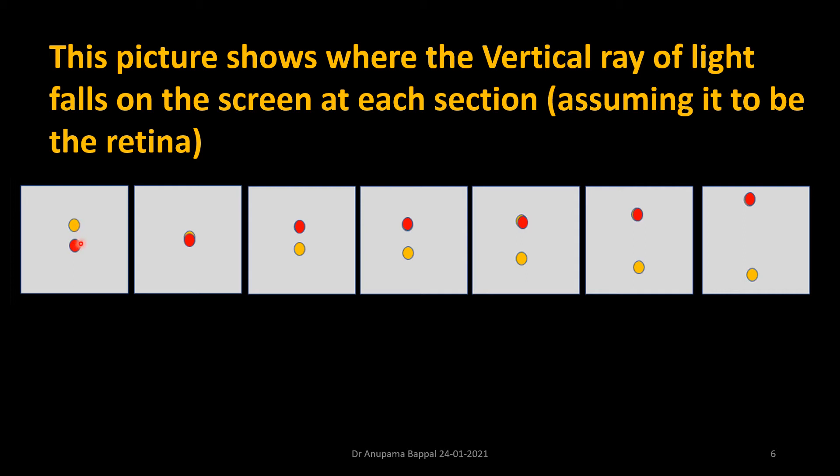As we learned previously, the vertical ray of light converges faster. So here, the vertical ray of light is quite closer. It has converged here and they start diverging. And at this point, it is far apart.